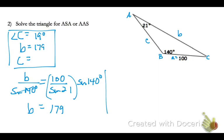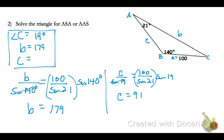Now let's solve for side C. C over the sine of 19 equals 100 over the sine of 21. Multiply both sides by the sine of 19, and side C is 91. Let's check for reasonableness: 19 degrees is a small angle and side C is 91; angle B is much bigger at 140 degrees, and side B is much bigger than 91. These measurements sound reasonable.